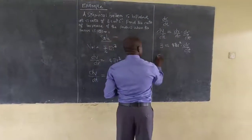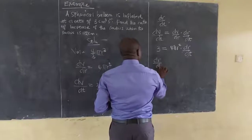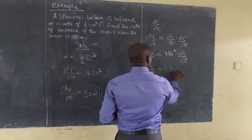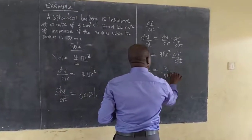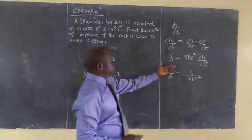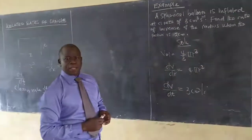So, this means dr/dt to be equals 3 out of 4 pi r squared from simple mathematical subject.